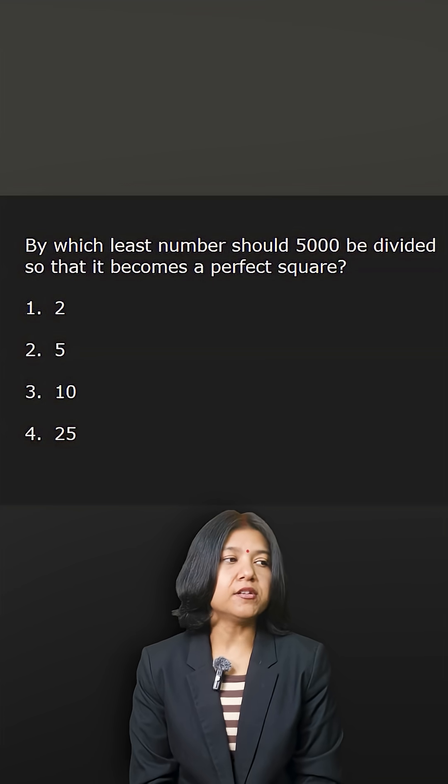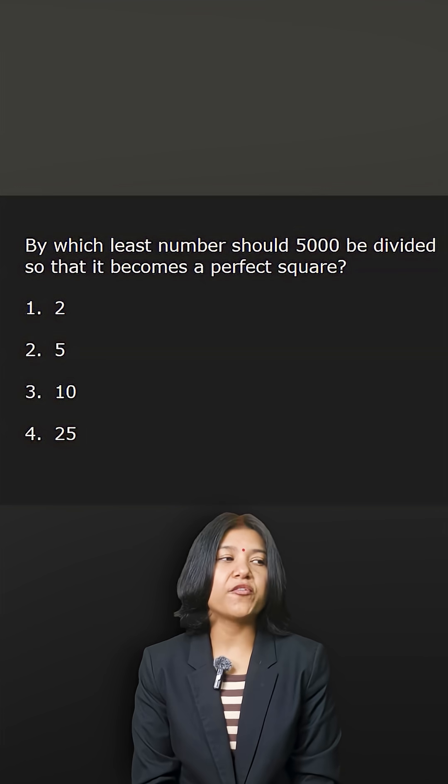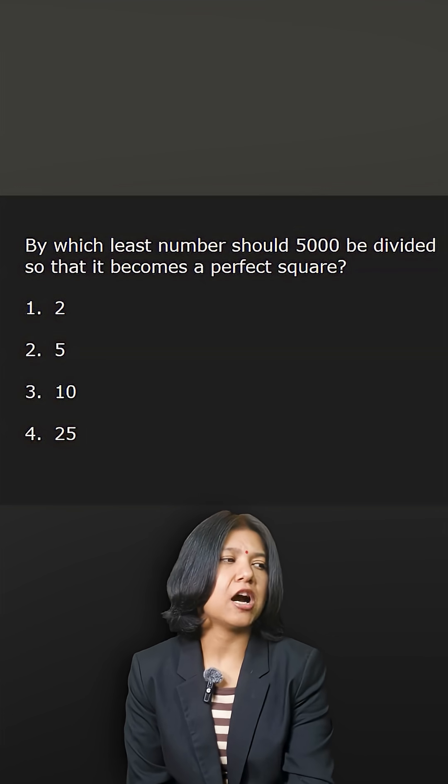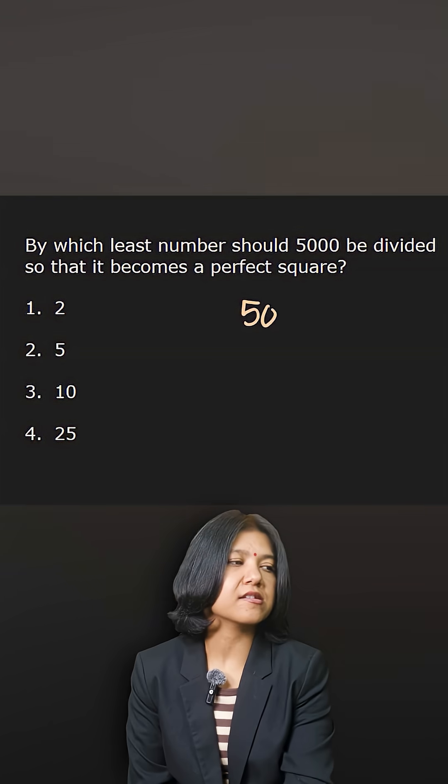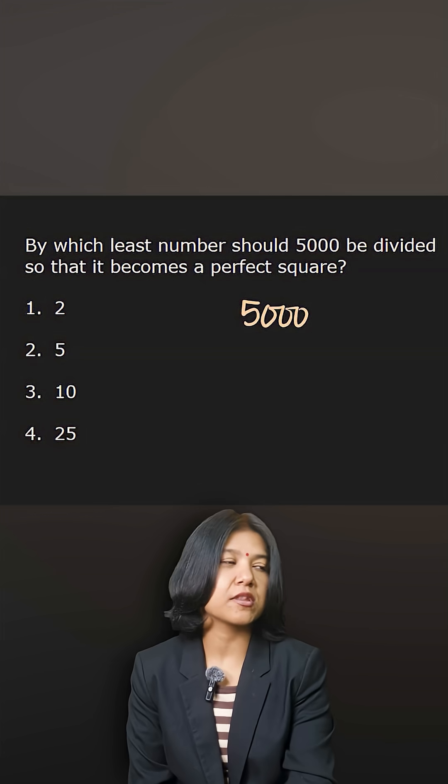You want to divide by some number and you want to obtain a perfect square number. The given number is 5000. How would you begin? You want to split this number by factorizing with a square number that you know. I know 100 times 50 is 5000.